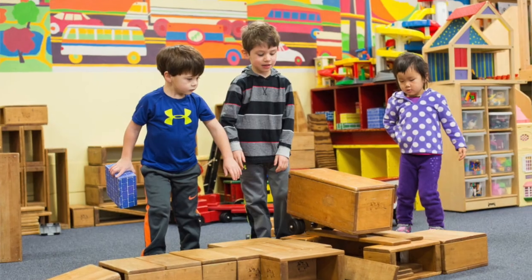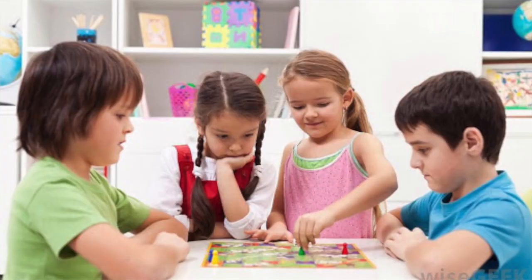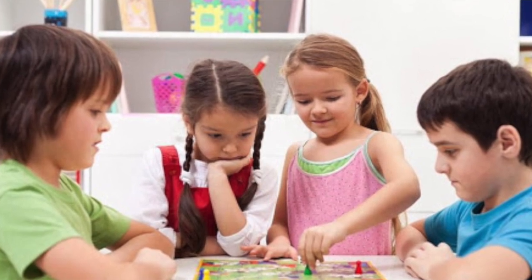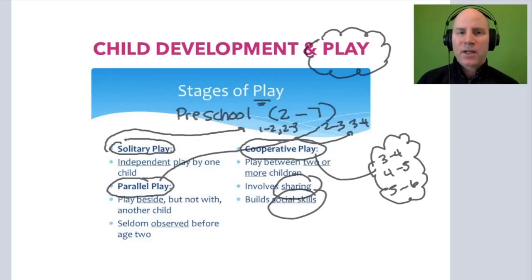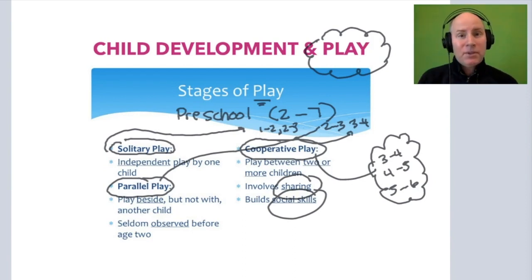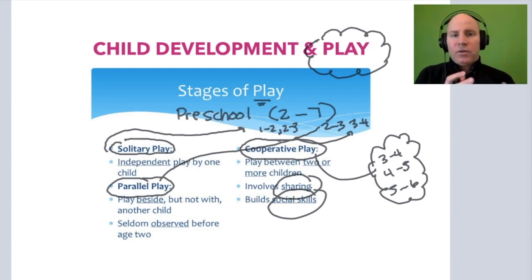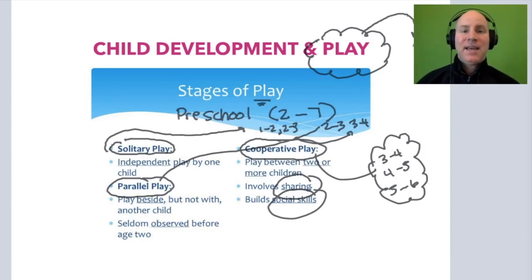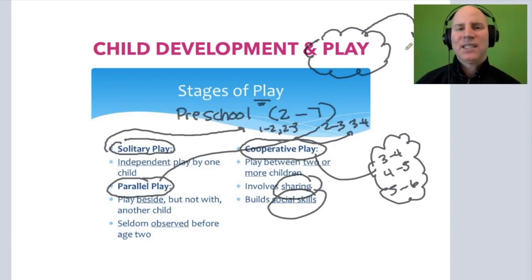Cooperative play involves students sharing and interacting, building social skills, taking turns, building empathy. Cooperative play is the ultimate goal, because we have an awareness of Vygotsky saying that learning happens through social interaction. Any type of activity in preschool, especially for our three-to-fours, four-to-fives, and kindergarten five-to-sixes, we want to make sure that the learning happens in an environment of play — that risk-free, hands-on activity that facilitates the learning.